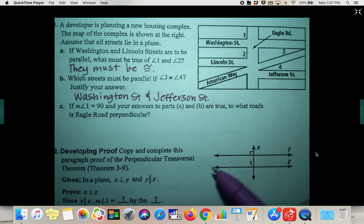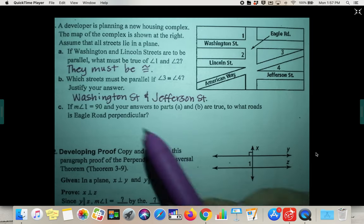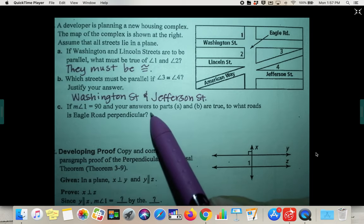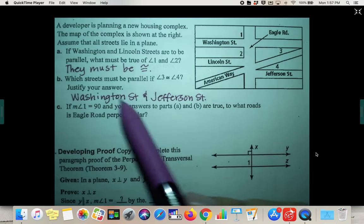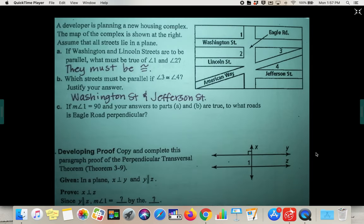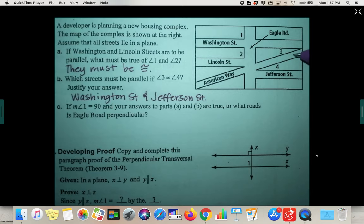Part C, if the measure of angle one, which is up here, is 90, which we can kind of assume it's 90, but now if it tells us it's 90, and your answers to parts A and B are true, so up here our answers are true, what roads is Eagle Road perpendicular to? So this would be perpendicular to Washington, to Lincoln, and also to Jefferson, since this would be our transversal, American Way is the transversal.